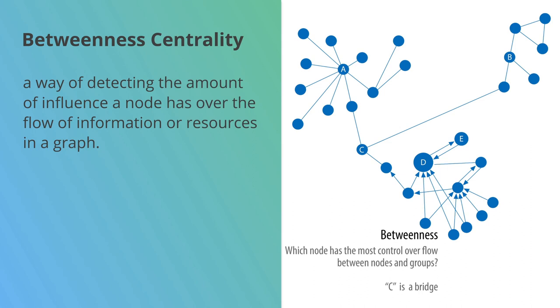Betweenness centrality is the next one we're going to look at. Here it's a way of detecting the amount of influence that a node has over the flow of information in a graph.